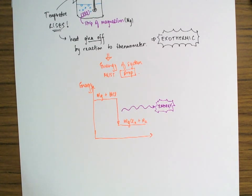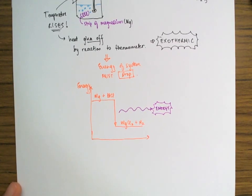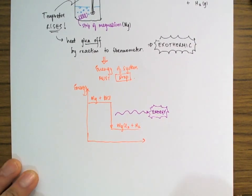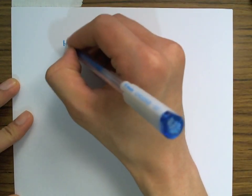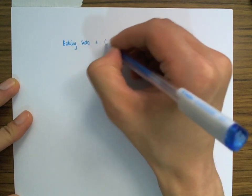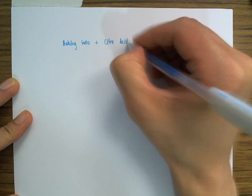Now let's take a look at a different sort of reaction — an endothermic reaction, one where energy is absorbed by the system. For an endothermic reaction, I'm going to choose baking soda and citric acid as my example.